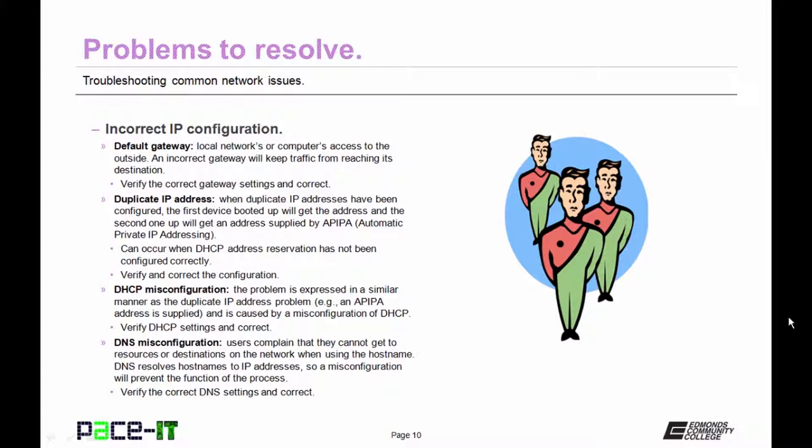Under incorrect IP configurations, we will begin with the default gateway. The default gateway is the local network or computer's access to outside networks. An incorrect gateway will keep traffic from reaching its destination. If it's suspected, verify what the correct gateway settings should be and correct it.